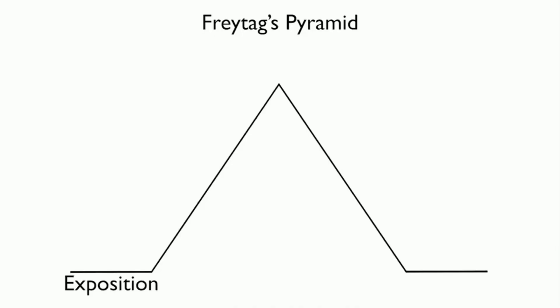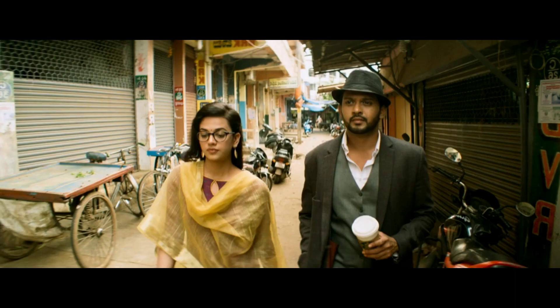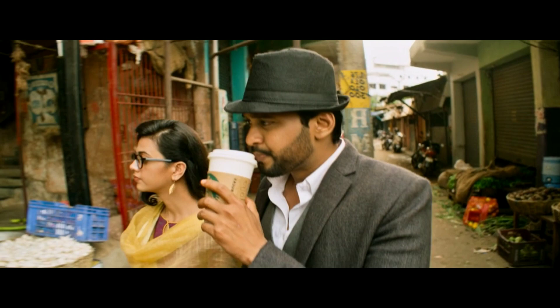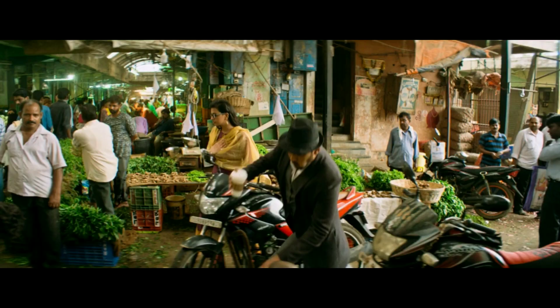First, we have Exposition. This is where we introduce our characters — our protagonist, his or her job, goals, interests, traits, relationships, background, and the place where the plot is set in. From the first 30 minutes of Agent Sahishrin Vasatrya,